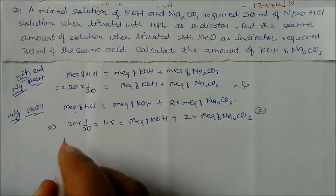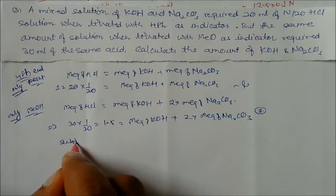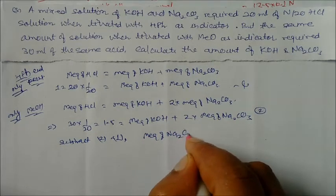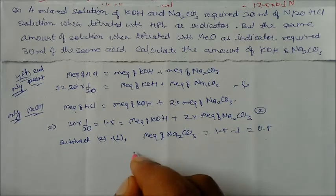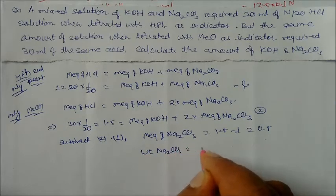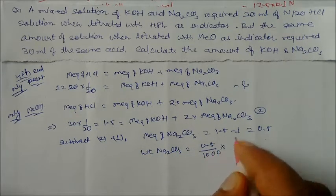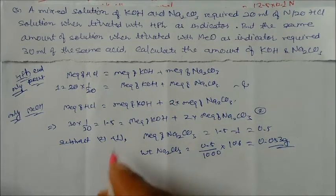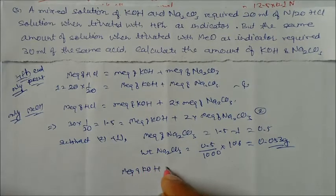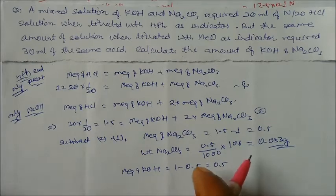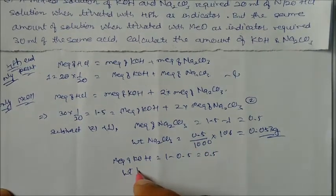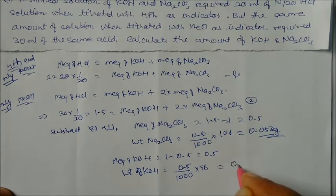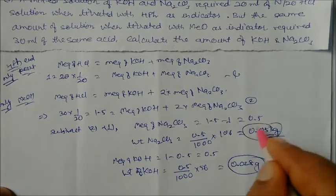Subtracting equation 1 from equation 2: milliequivalents of Na₂CO₃ = 1.5 − 1 = 0.5. Weight of Na₂CO₃ = 0.5 / 1000 × 106 = 0.053 grams. Milliequivalents of KOH = 1 − 0.5 = 0.5. Weight of KOH = 0.5 / 1000 × 56 = 0.028 grams (approximately 0.5 with given molar mass used).